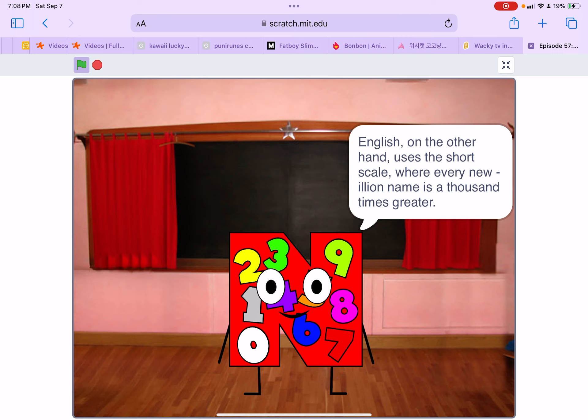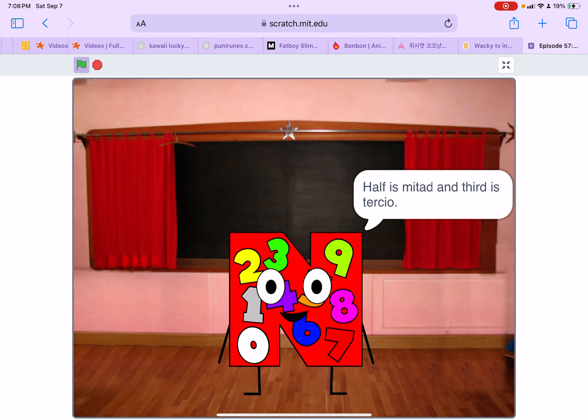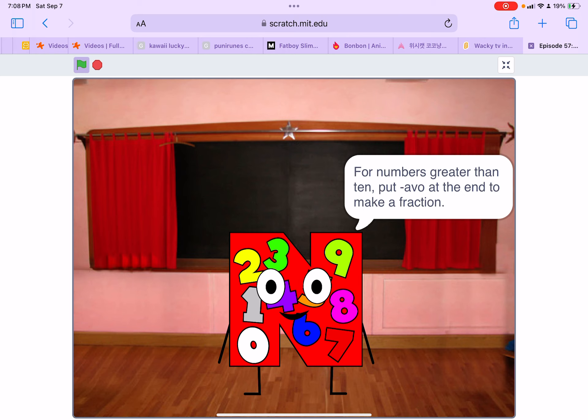Half is mitad and a third is a tercio. Quarters to tenths are just their masculine form ordinal number names. For numbers greater than 10, put -avo at the end.